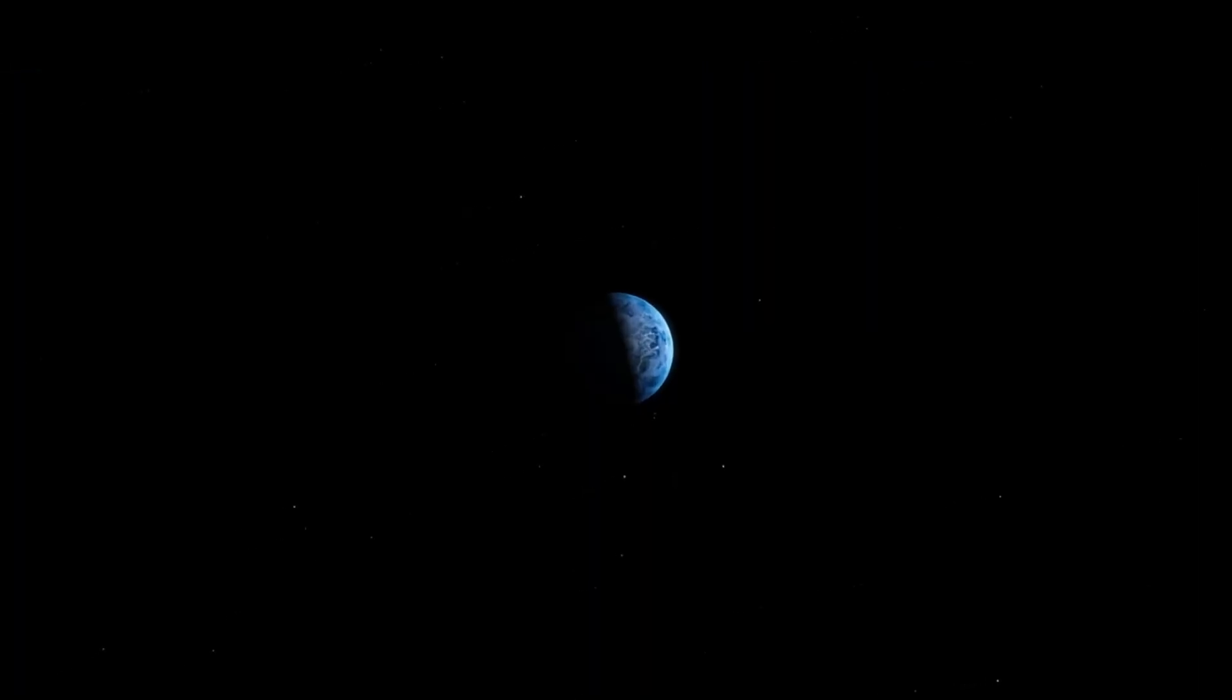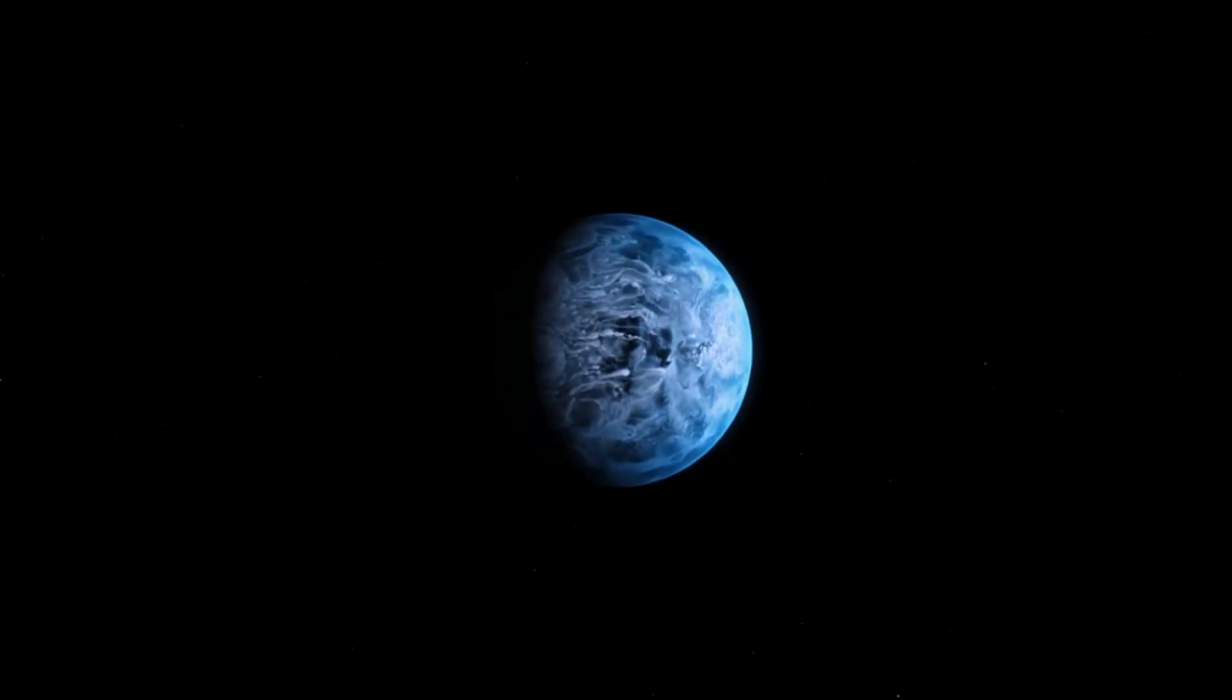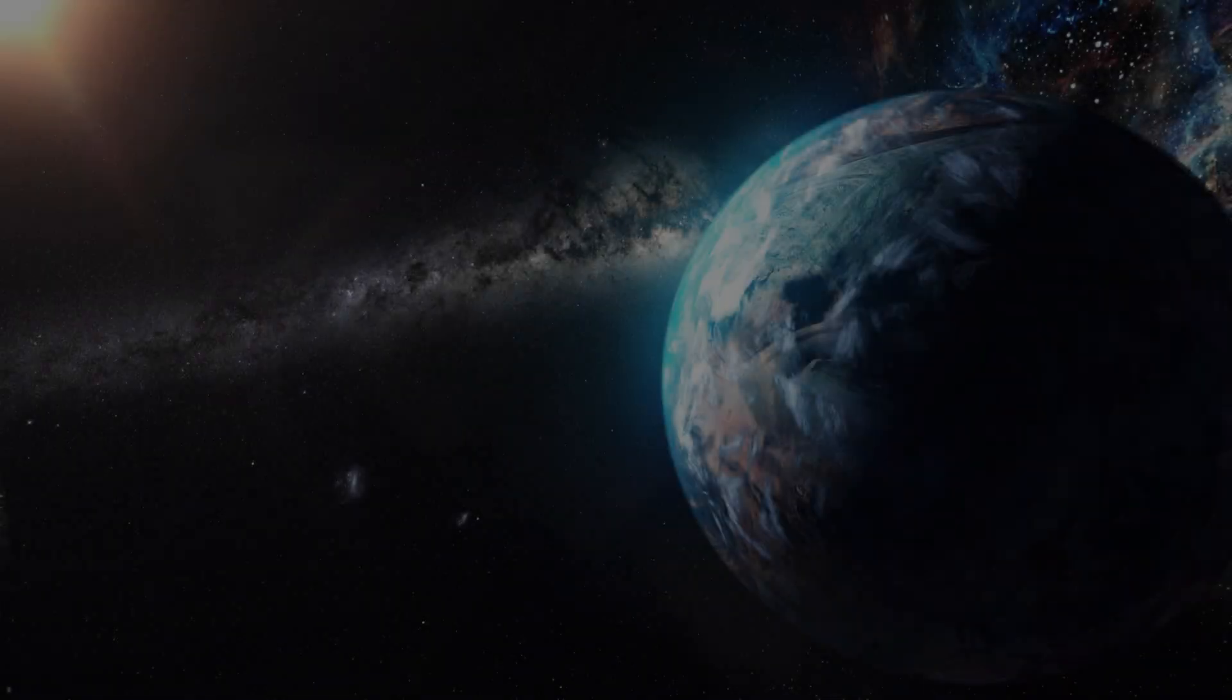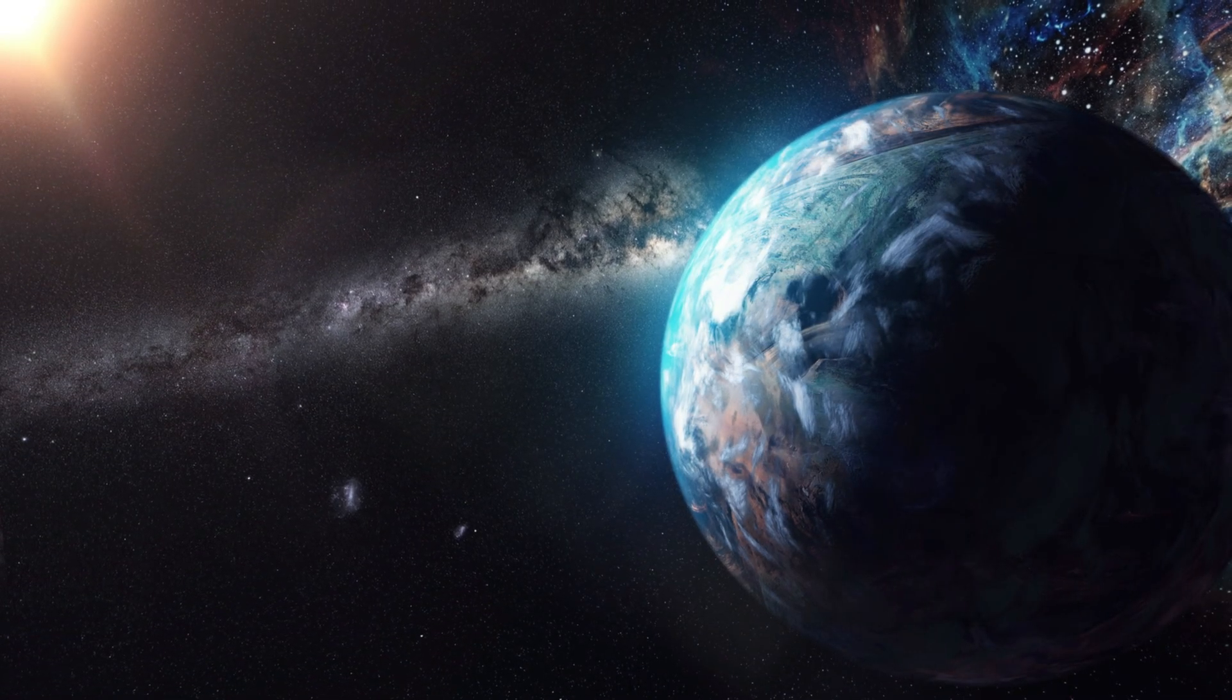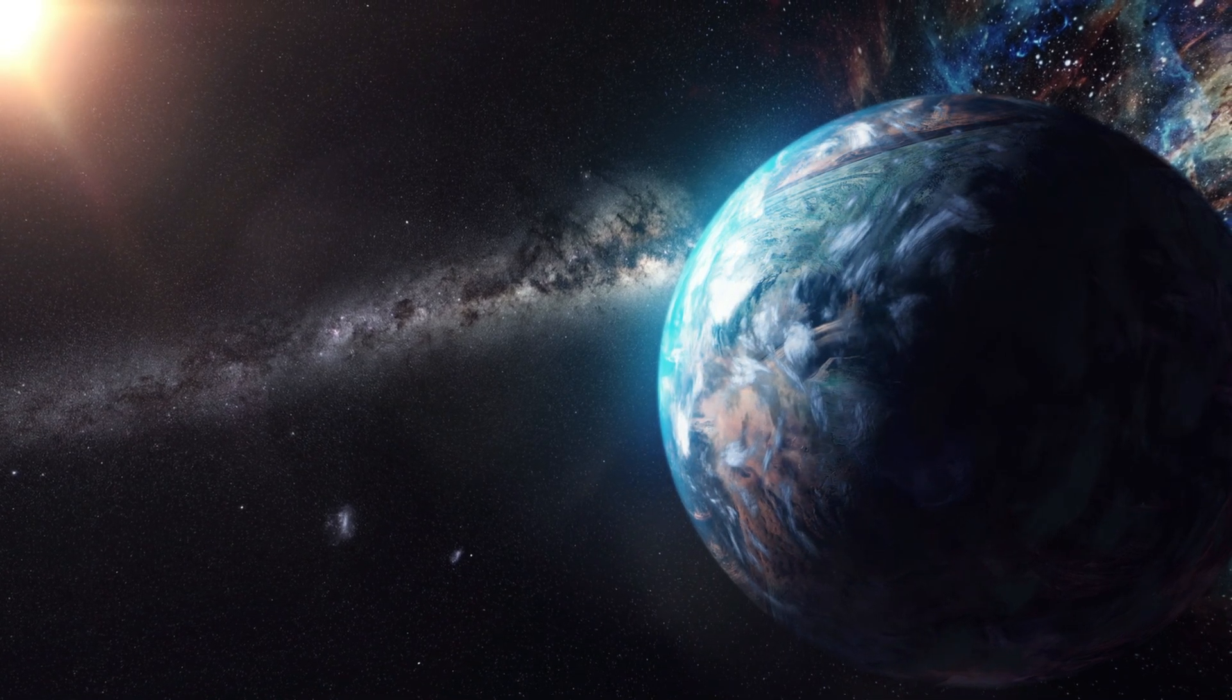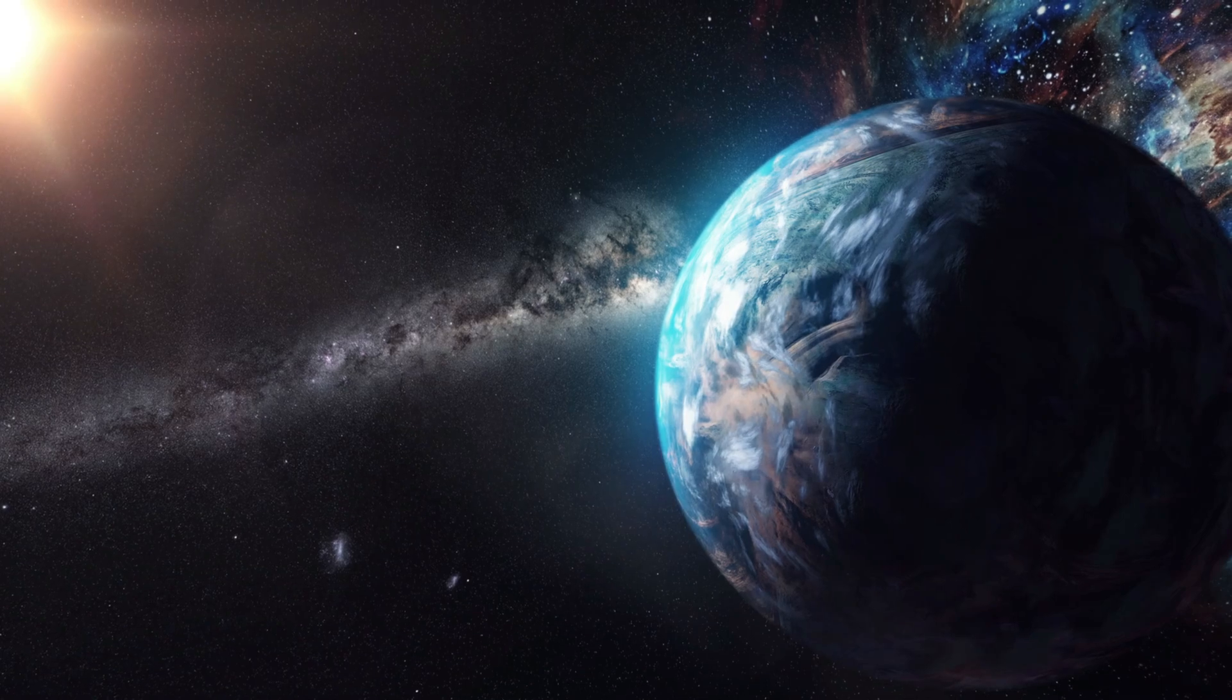Our first stop takes us to HD 189733b, a gas giant located some 63 light years away in the constellation Volpecula. Now, at first glance, this planet might appear inviting. It boasts a beautiful azure blue color, reminiscent of our own Earth. But don't be fooled.